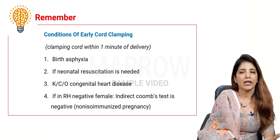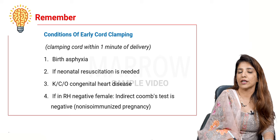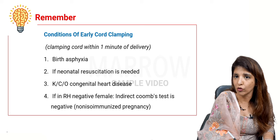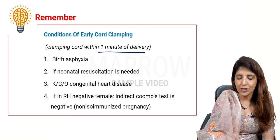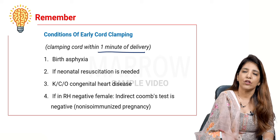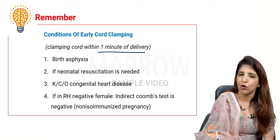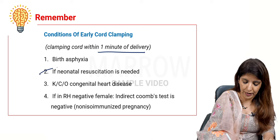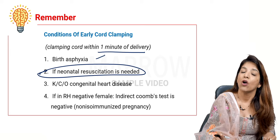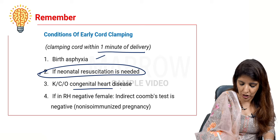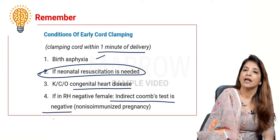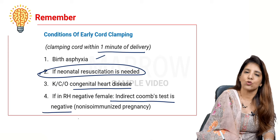Step two is delayed cord clamping, which is part of AMTSL. Early cord clamping — when the cord is clamped within one minute of delivery — is not part of AMTSL. The single best indication for early cord clamping is if the neonate needs resuscitation, such as in birth asphyxia, congenital heart disease, or in RH-negative females if the indirect Coombs test is negative (non-isoimmunized pregnancies).